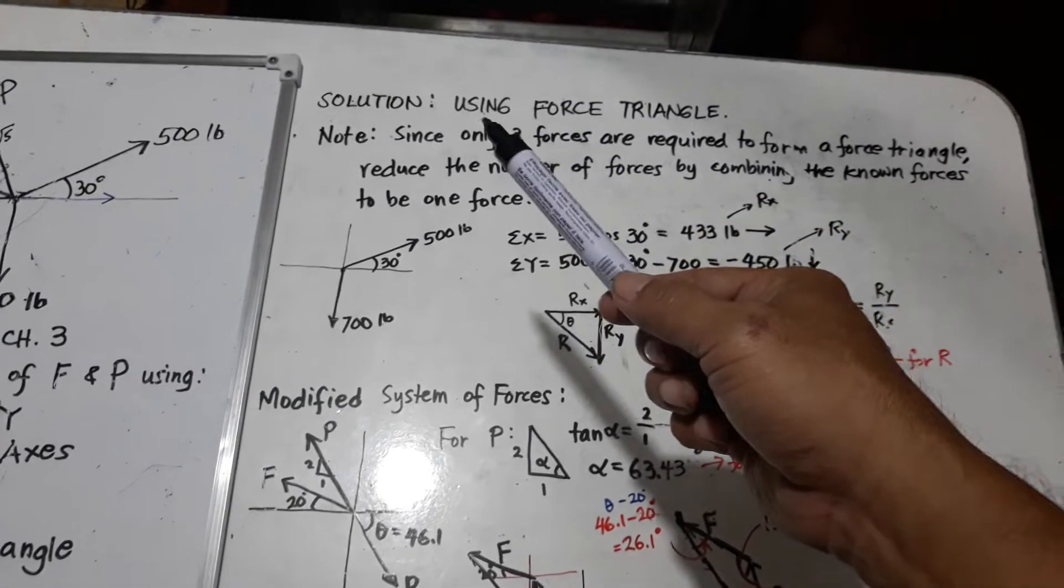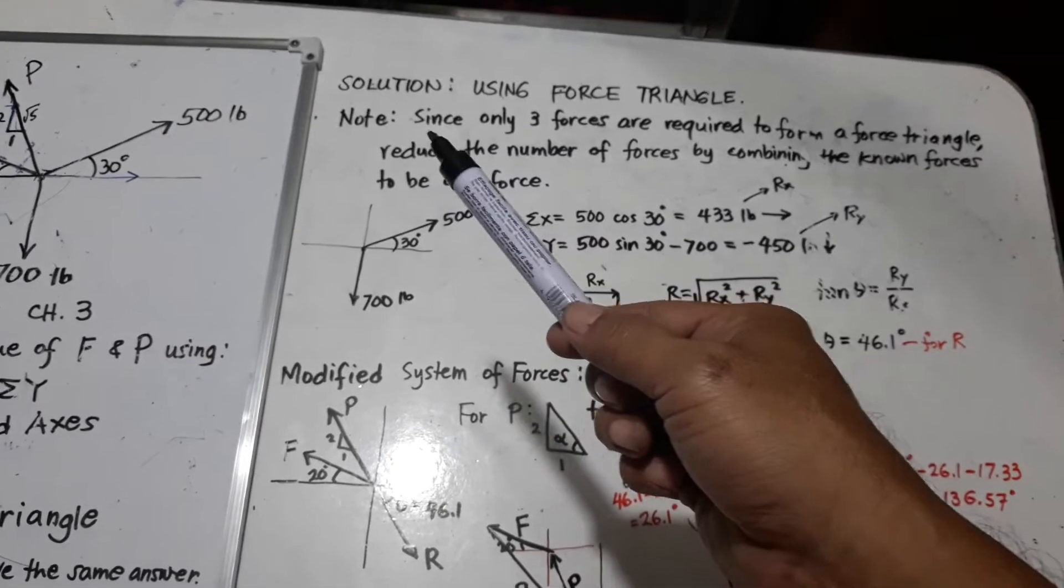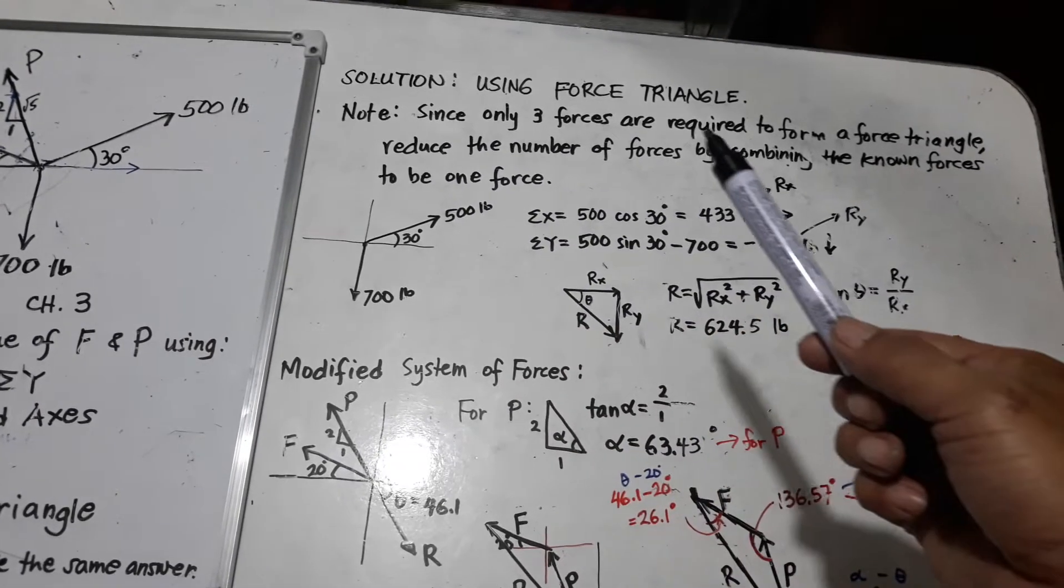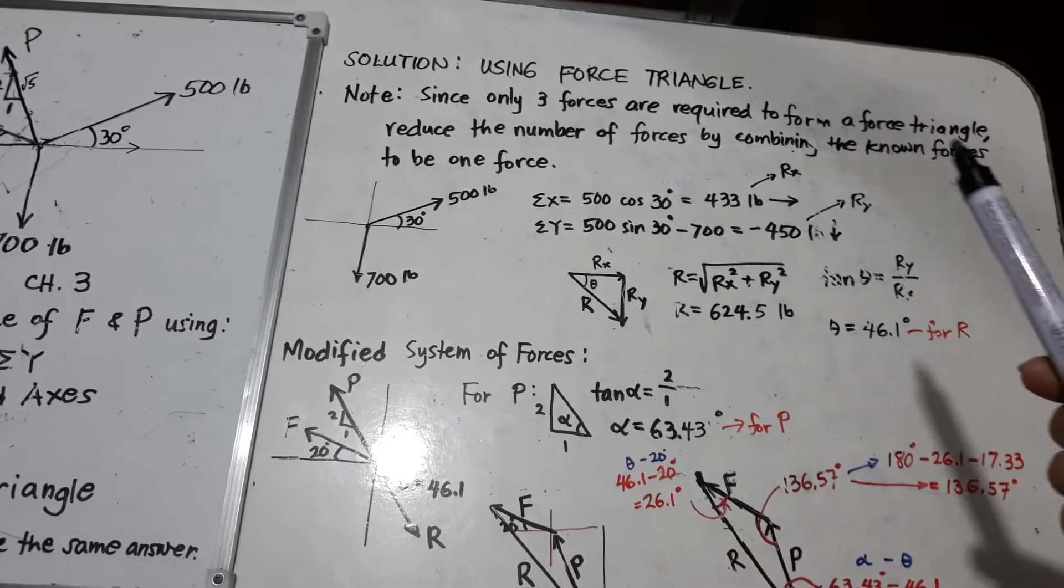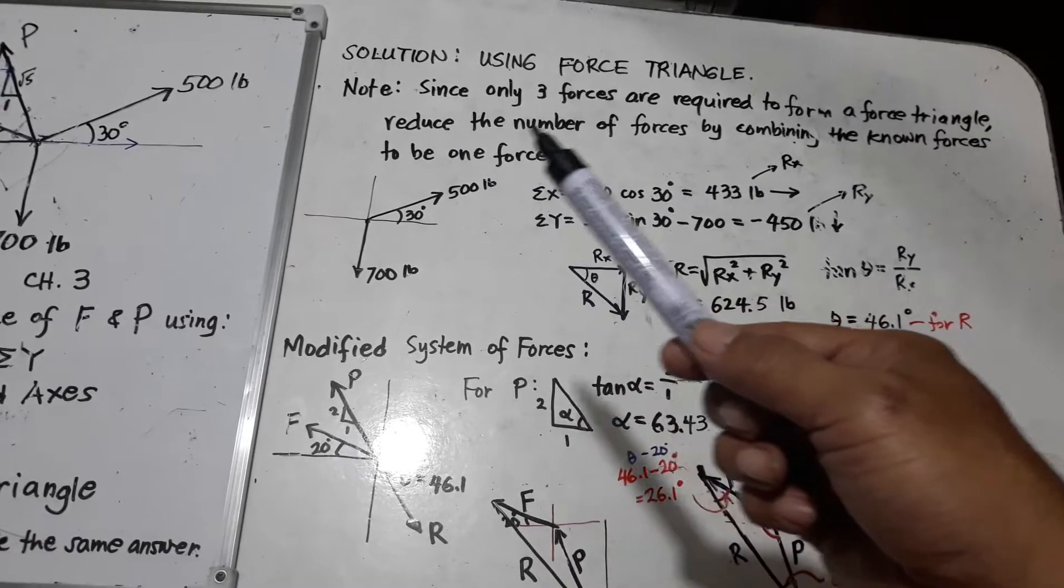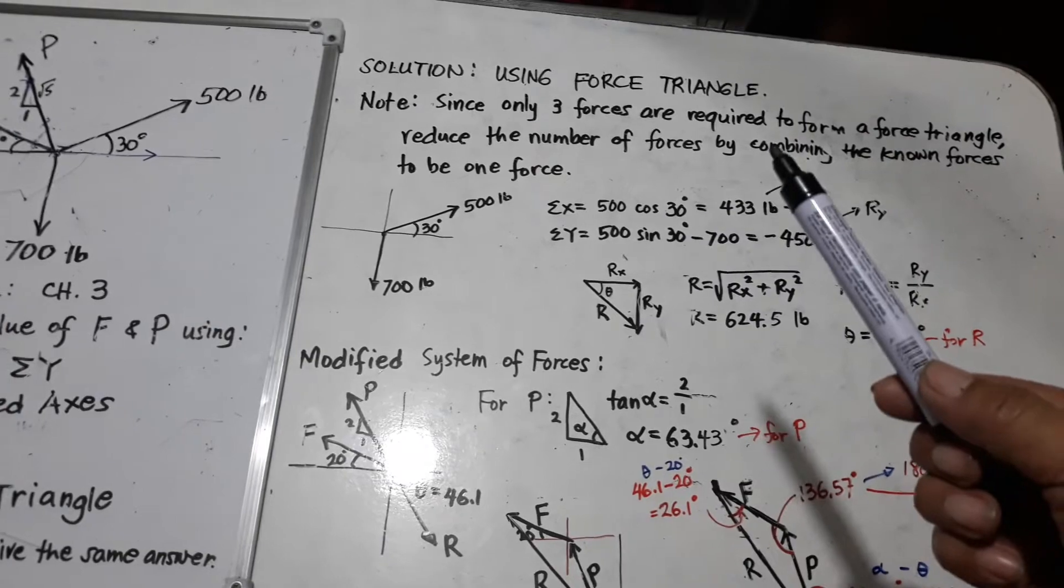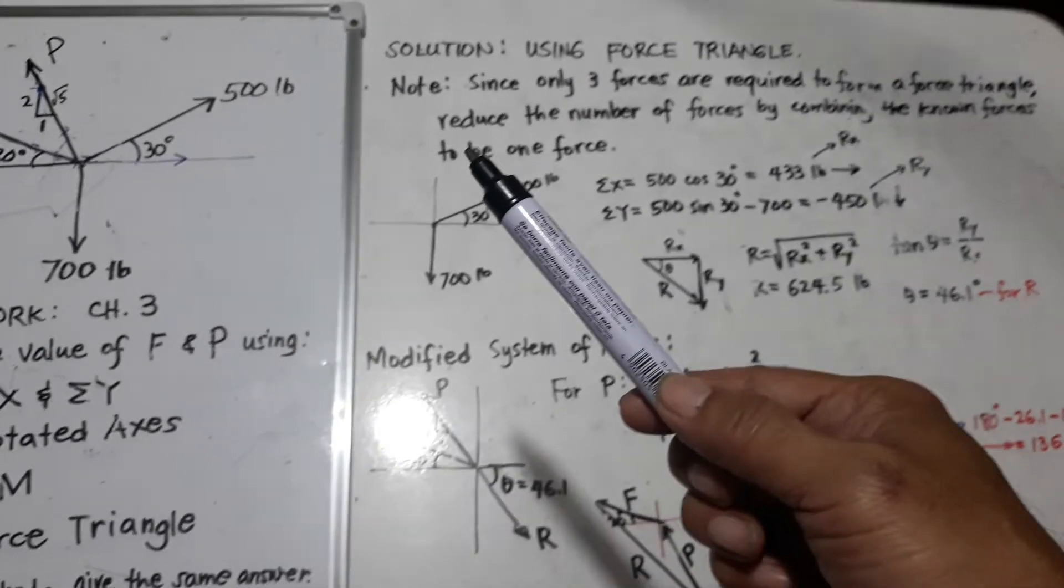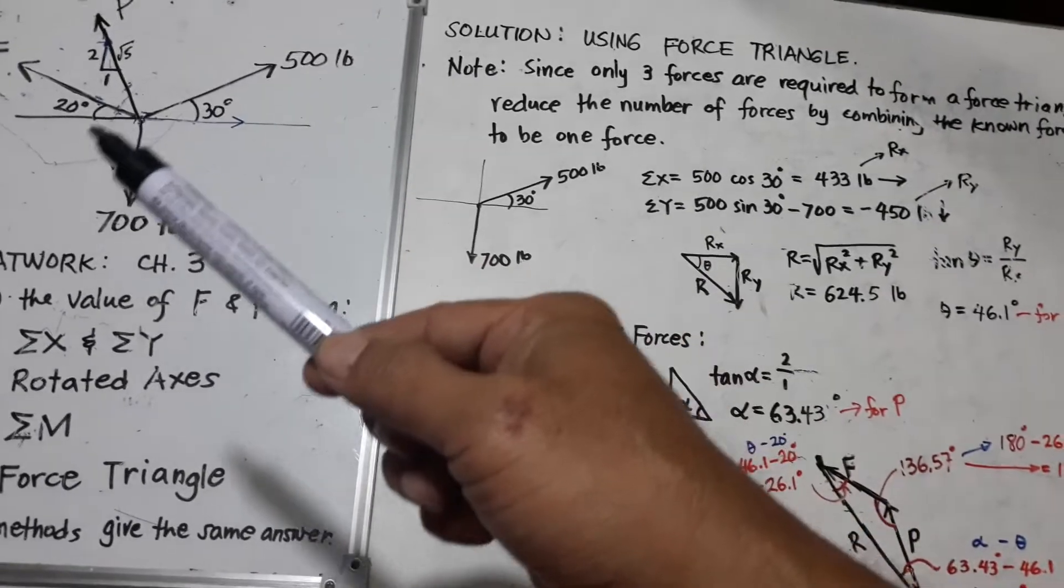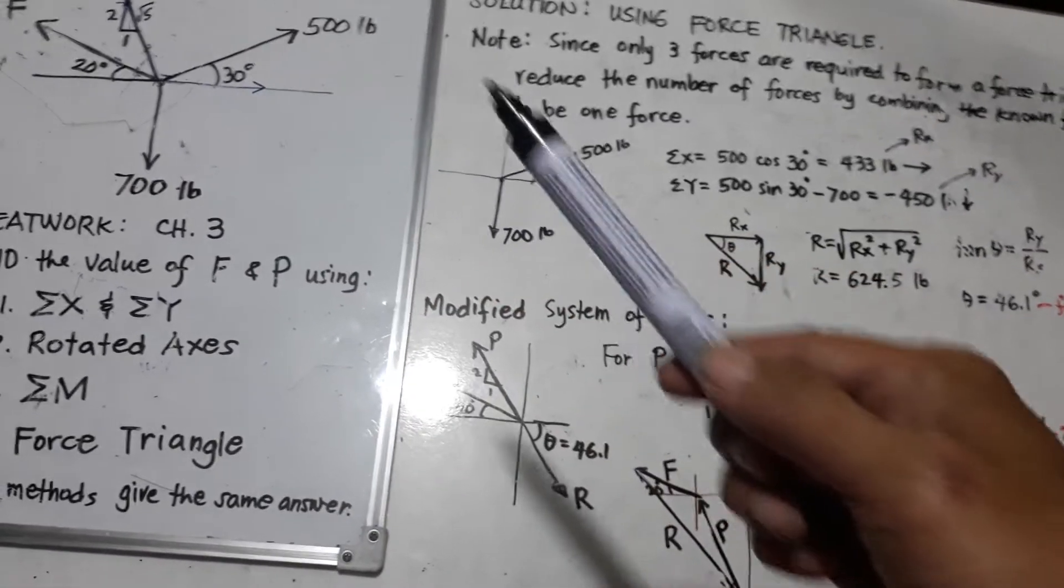Solution, using force triangle. Note, since only three forces are required to form a force triangle, reduce the number of forces by combining the known forces to be one force. So, the forces to be combined will be this one, 700 and 500-pound force.